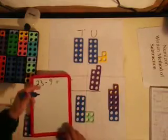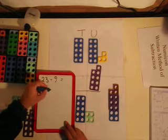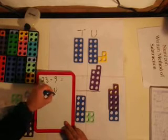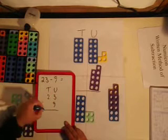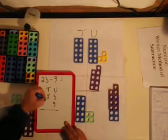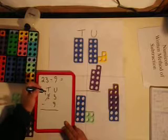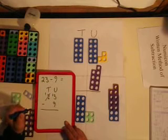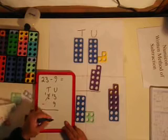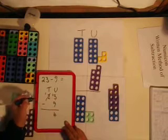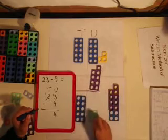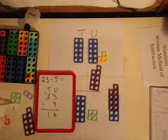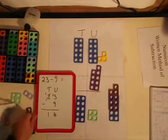And they can write that calculation up on the board. So we have 23 subtract 9. One 10 left over. Exchange into the units. The 4 remainder comes from here, and then the 10 in the tens column.